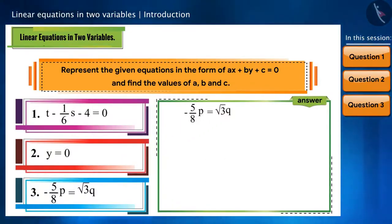Similarly, we will see the third equation also very carefully and write it in the general form. And we will get a is equal to minus 5 by 8, b is equal to minus root 3, and c is equal to 0.